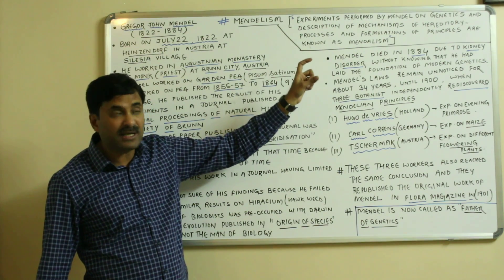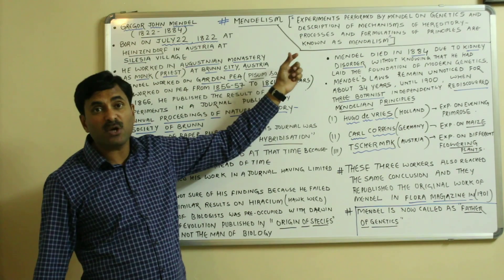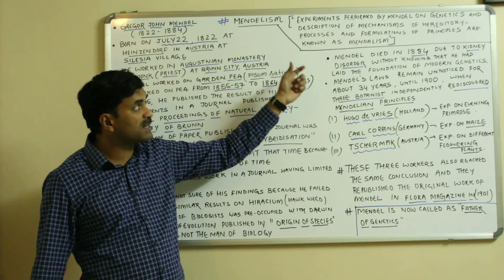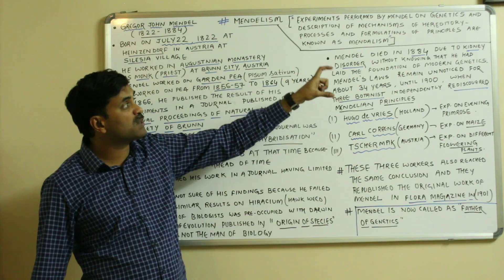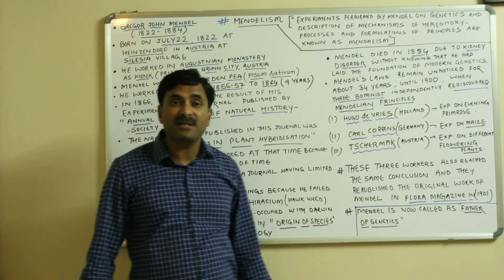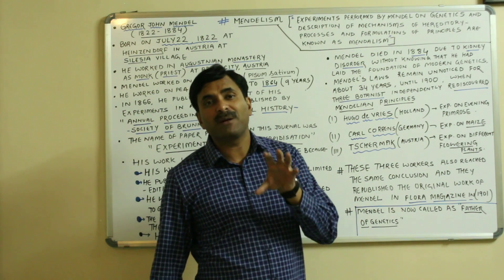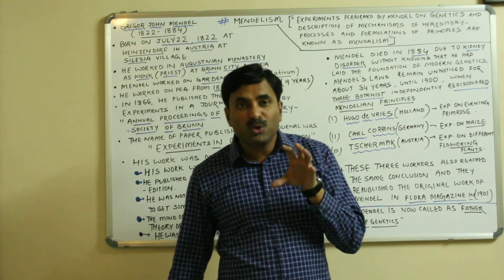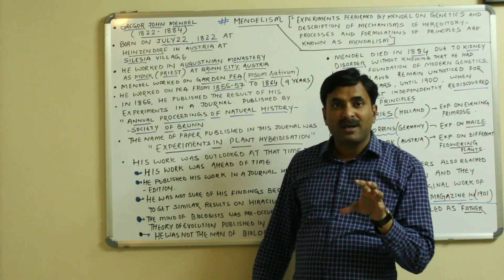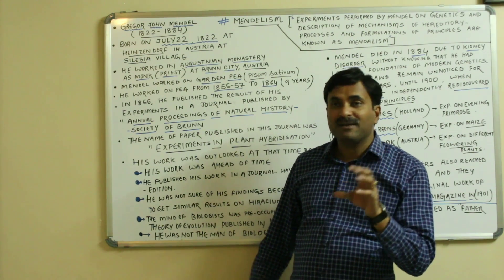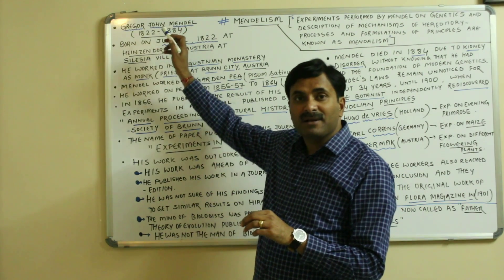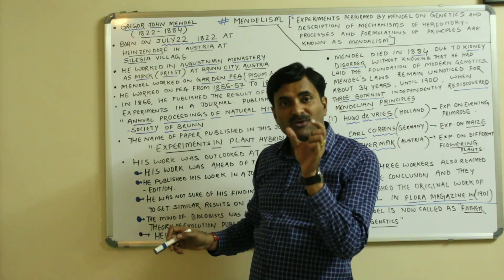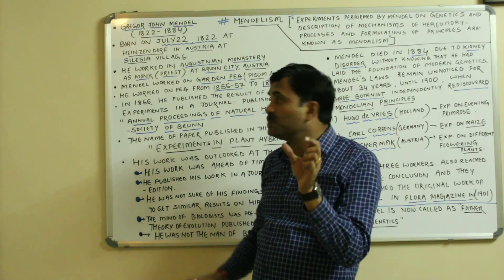The experiments performed by Mendel on genetics, the description of mechanisms of hereditary processes, and the formulations of principles are known as Mendelism. When we are talking about Mendelism, we must know something about Mendel. The full name of Mendel was Gregor John Mendel, and his life span is between 1822 to 1884.